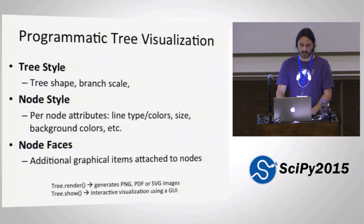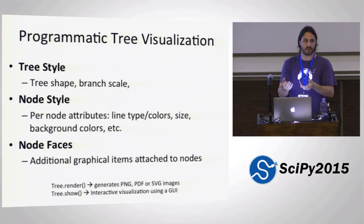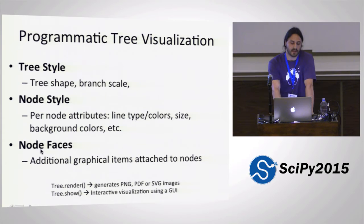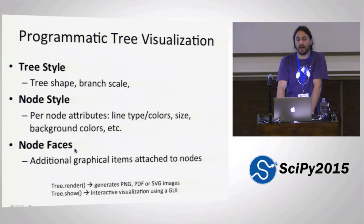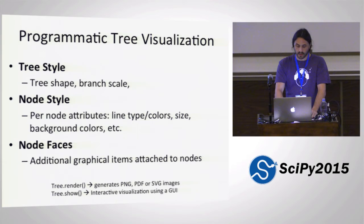The tree style object allows you to set general attributes in the tree, like the shape or the branch scale being used. The node style is a set of attributes available in every single node in the tree, which means that as soon as you get a pointer to an internal node, you can access all these attributes. You just set a few values and then when you render the tree, those specific settings will be applied. And then there is a third layer which is quite powerful for annotating trees — this is called node faces.